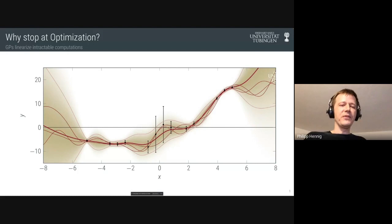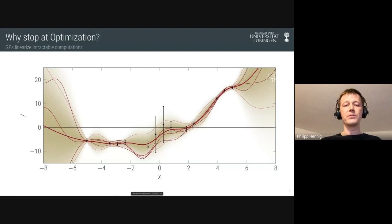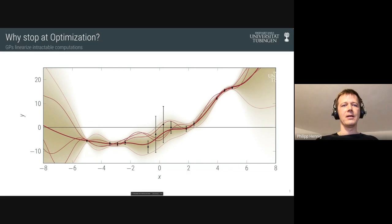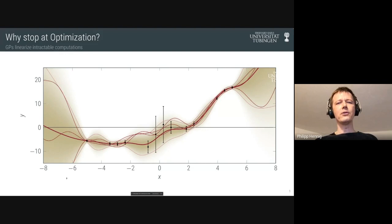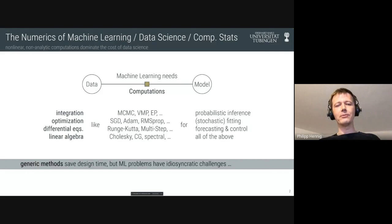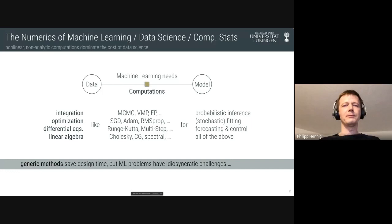What I'd like to convince you of today is that you can use the same techniques, the same understanding, the same machinery to apply to basically all of the numerical problems of machine learning. In my opinion, machine learning really is entirely numerical problems. A learning machine is a computer program that refines a model through data, but what actually happens on the computer is the solution of a numerical problem.